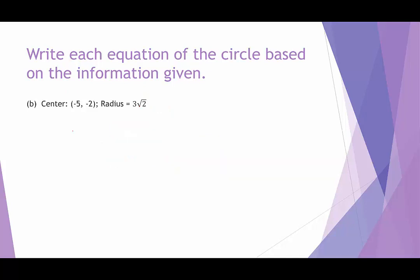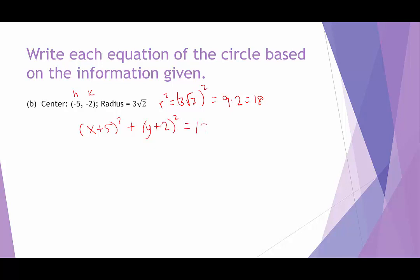In example B, we're again given the center, so we know h and k. The radius is 3 root 2, so r squared is 3 root 2 quantity squared. Distributing the exponent: 3 squared is 9, and square root of 2 squared is 2, so r squared is 18. Plugging in: x minus 8 plus 5, becomes x plus 5, quantity squared, plus y plus 2 quantity squared, equals 18.